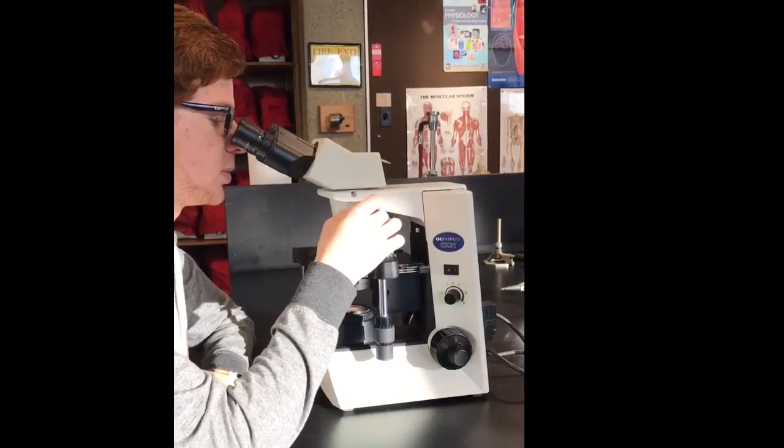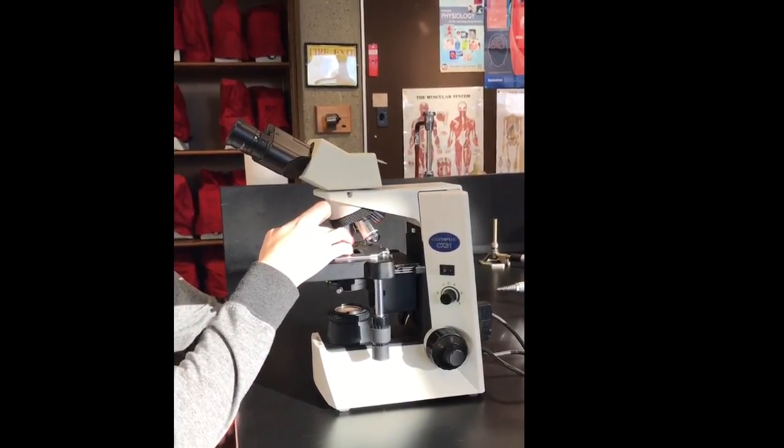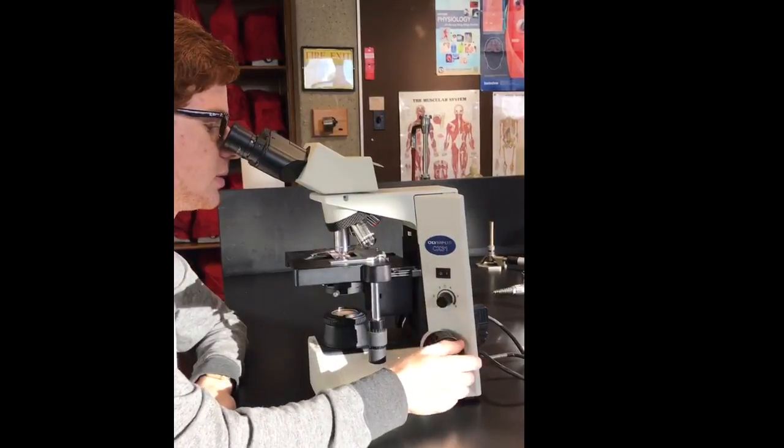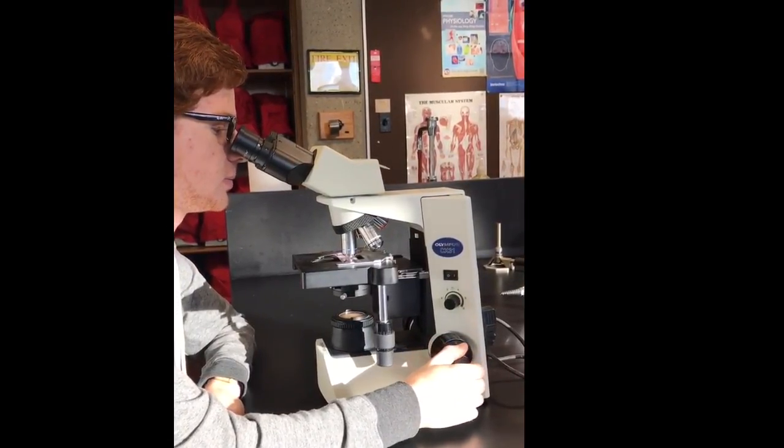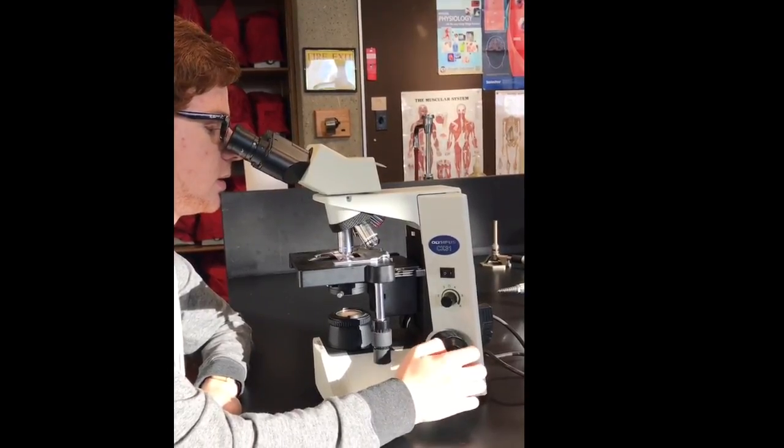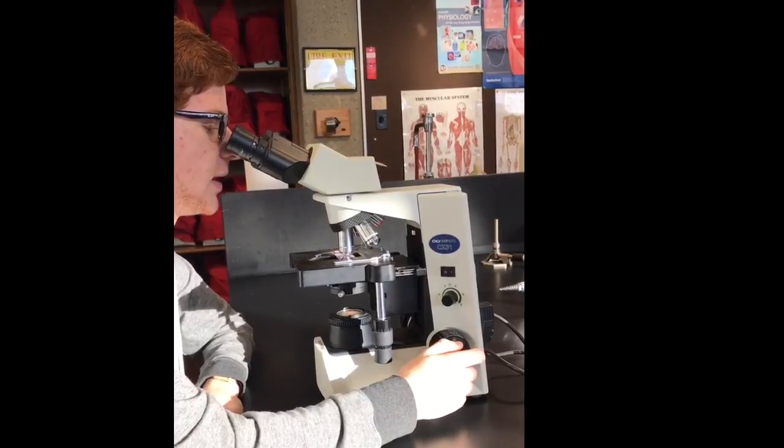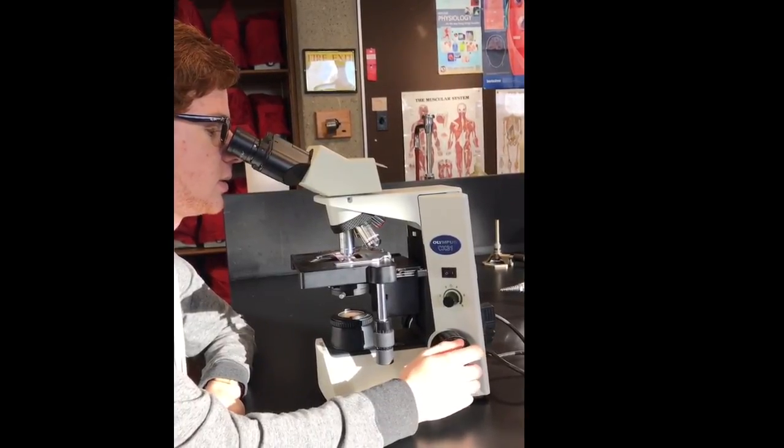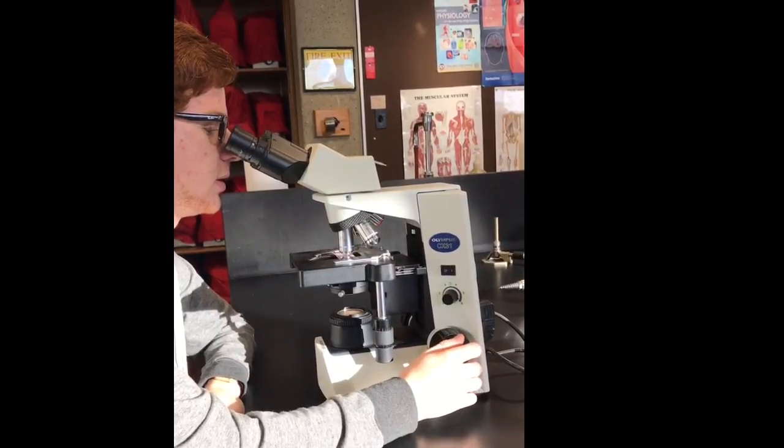Once you have your object in place, we can switch over to the 40x objective lens, and only use the fine adjustment. Usually only small adjustments work with the fine adjustment knob. So, adjust until you see your object.